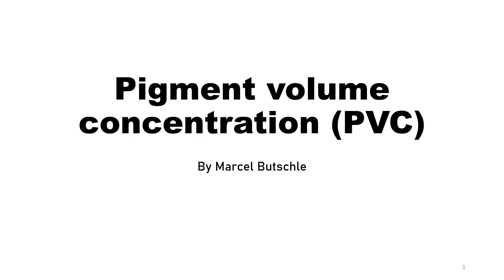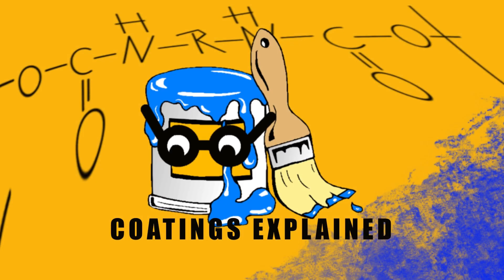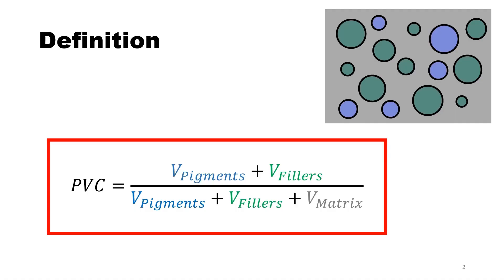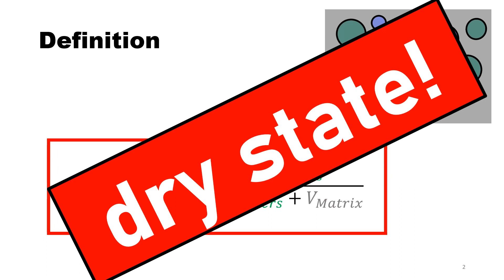Today I want to talk about the pigment volume concentration because it is a critical factor in paint formulation that has a significant effect on the properties. The pigment volume concentration is the ratio of pigment volume to the total volume of the paint — and it's not only the volume of the pigments that is considered but also the volume of the fillers. Very importantly, this is measured in the dry state.